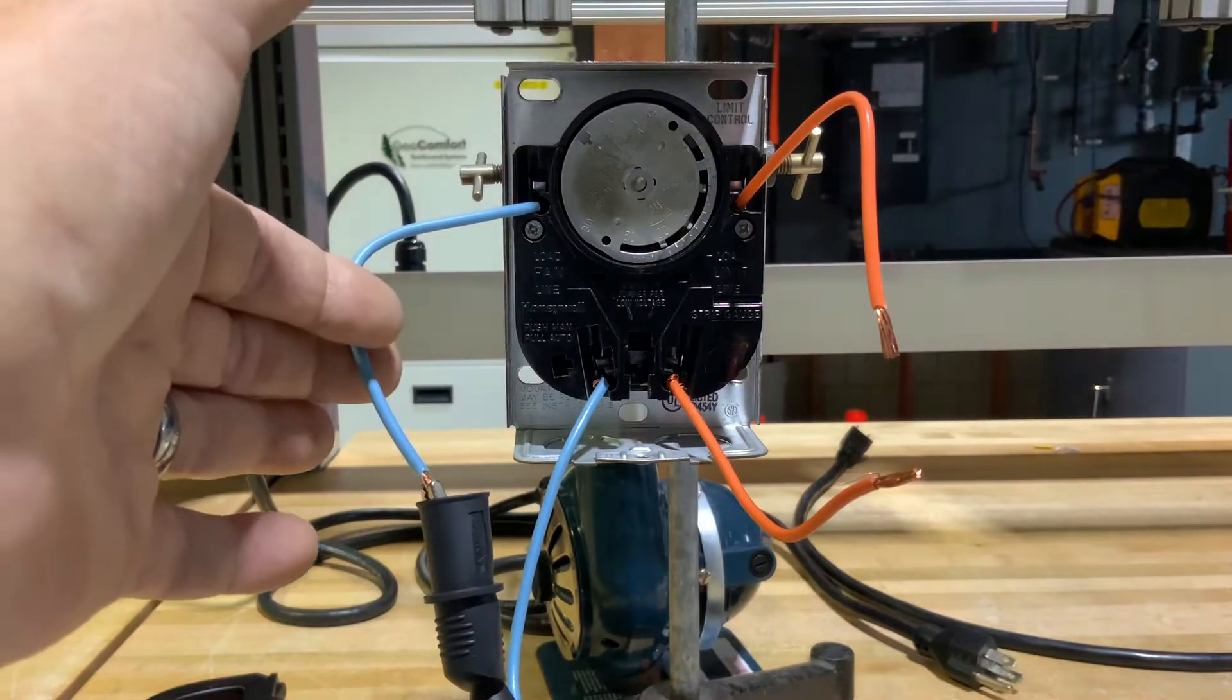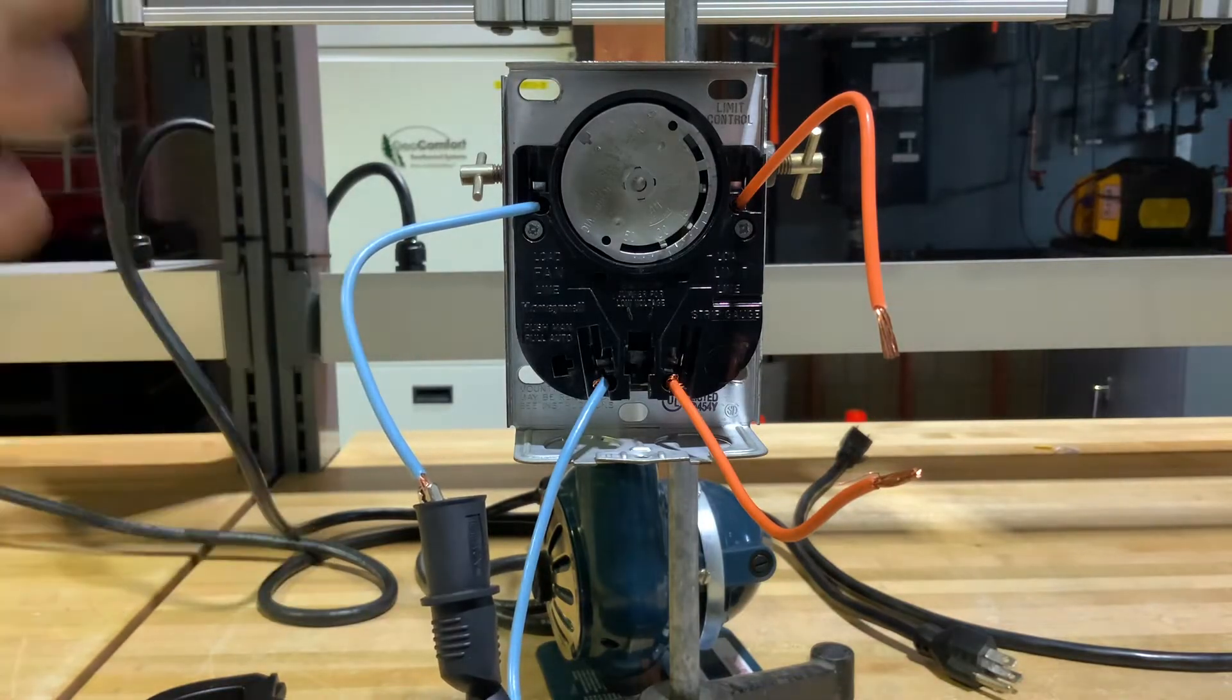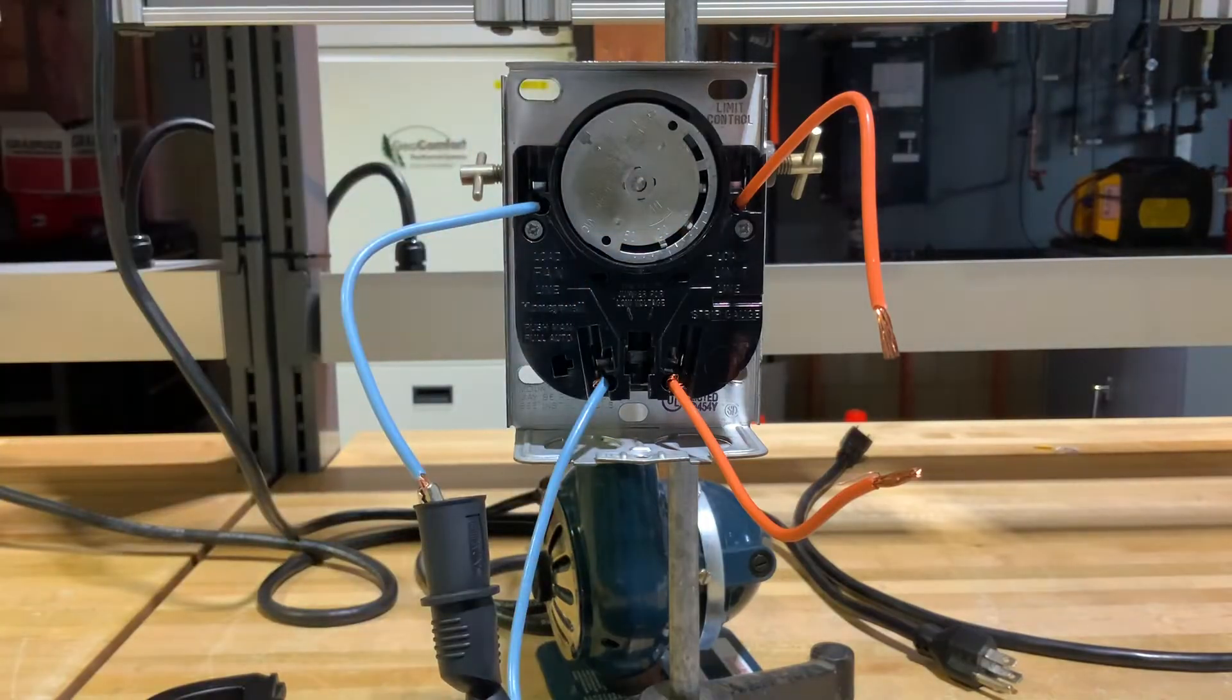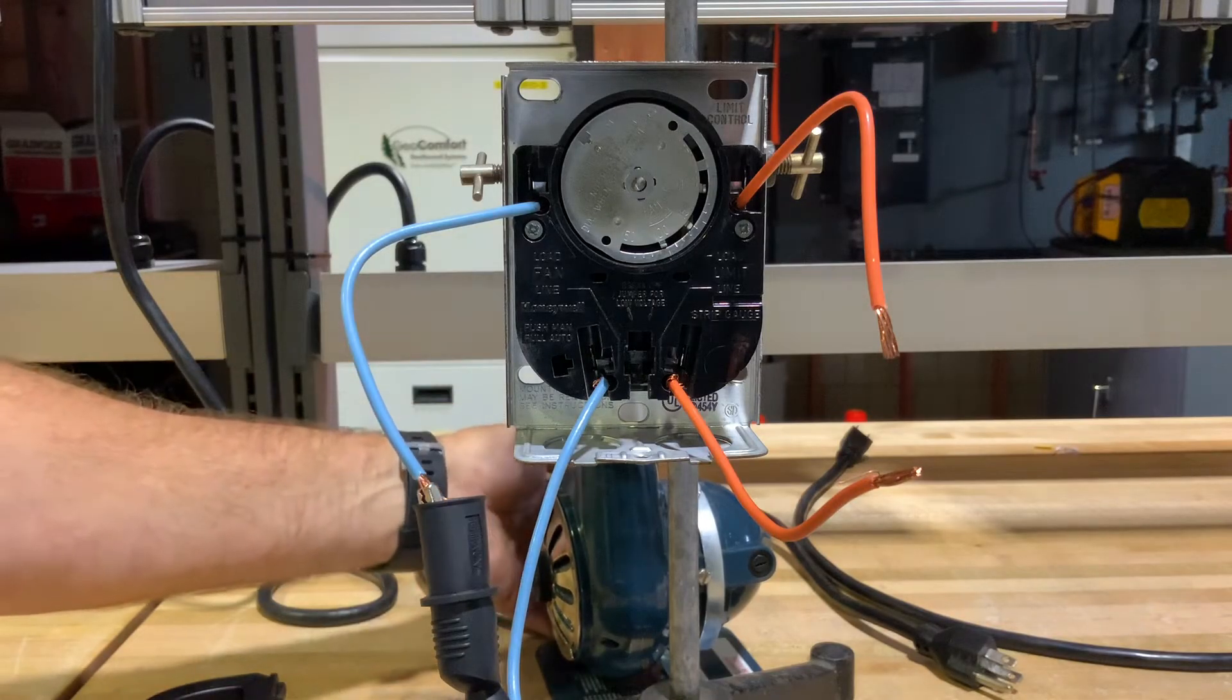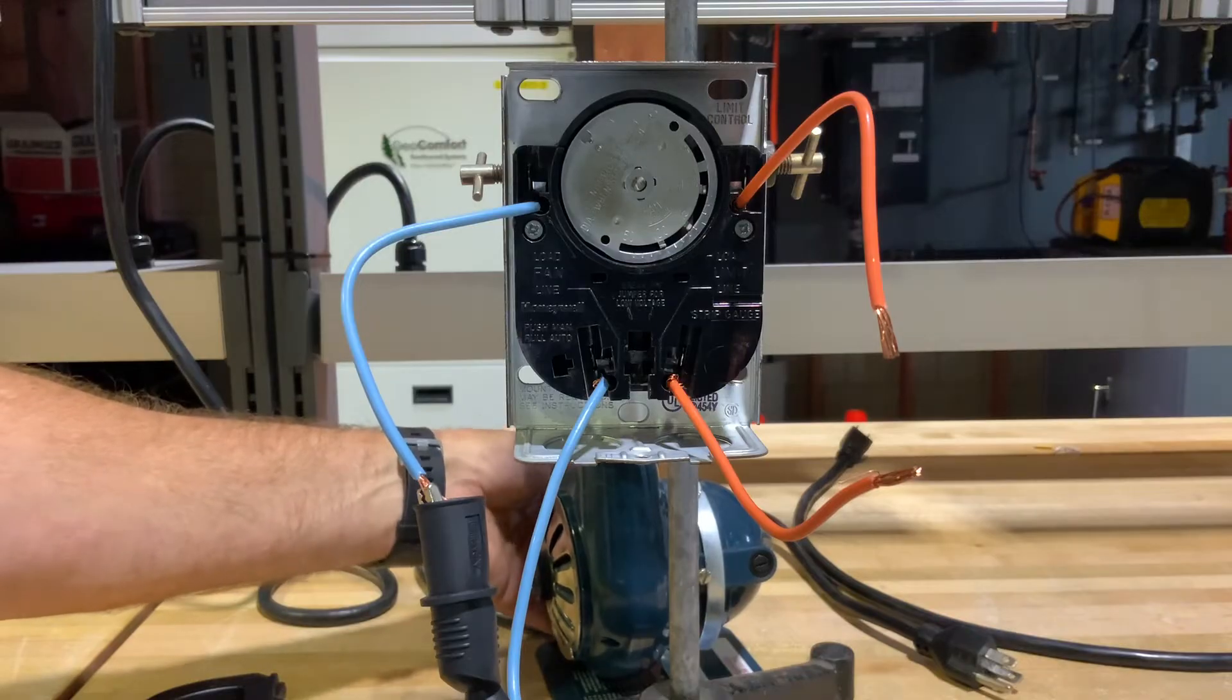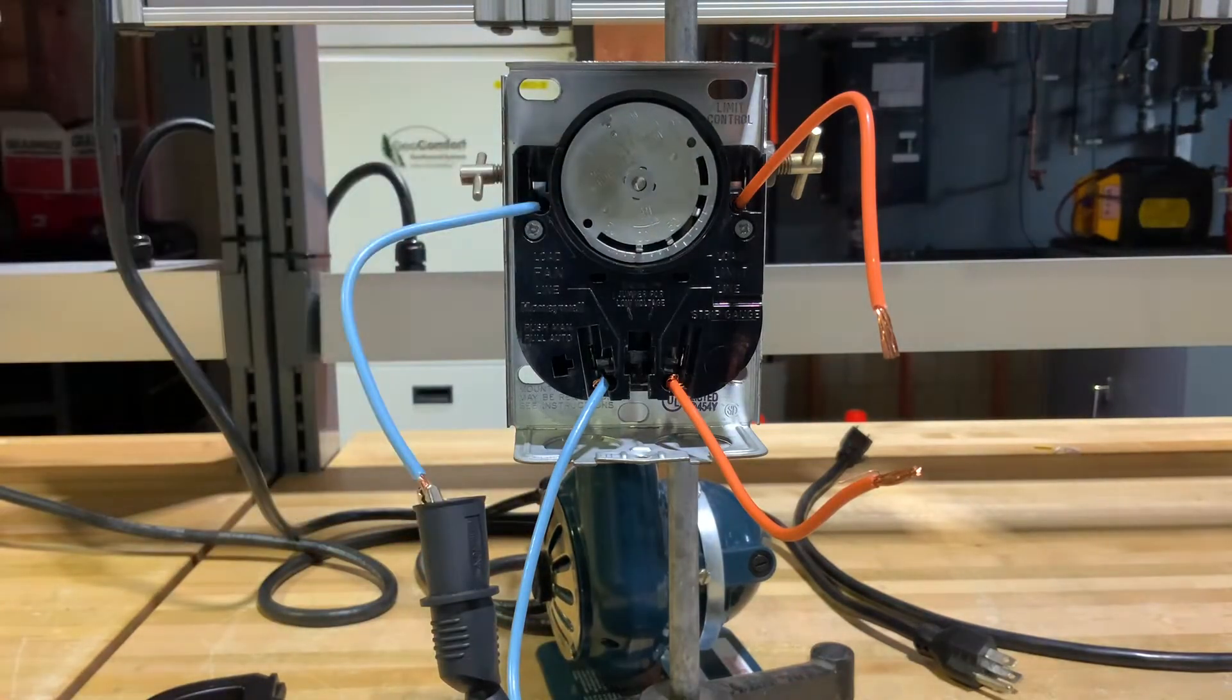The fan side of it also works as a thermostat. As we can see that dial there, these are labeled - we have fan and limit on the front of this. If we watch how this works as our furnace is heating up, this dial starts turning.